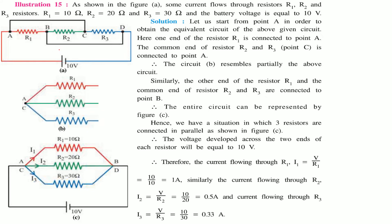In this first figure, current flows through resistors R1=10Ω, R2=20Ω, and R3=30Ω with battery voltage 10V. We need to find the equivalent circuit. One end of R1 is connected to point A and R2 is connected to point C. Between A and C we have R1 and R2, so these are in parallel.